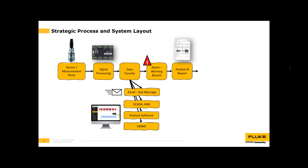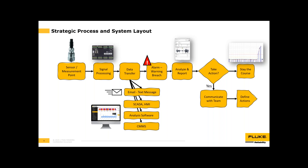From there, determine the next step. You might have nothing wrong — maybe it's a false positive, a trend spike that came back down, nothing to act on just yet. Or you might have a real problem that needs to be communicated with the team. You may need to look at the asset more closely, deploy a reliability strategy like alignment, thermography, or an oil sample. Communicate with the team, determine how much time you have, whether the asset can run a little longer, and that will define how quickly you need to plan and execute a fix.